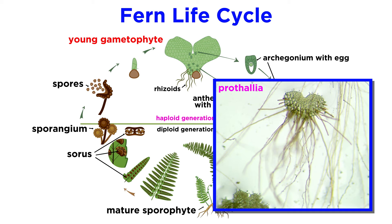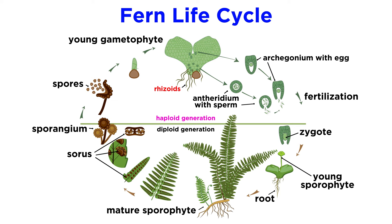Most of what scientists know about fern gametophytes, also known as prothalia, comes from studying them in a laboratory setting. The haploid gametophyte attaches to the soil with rhizoids. As with the other gametophytes we've discussed, a fern gametophyte bears both reproductive heads and can self-fertilize.